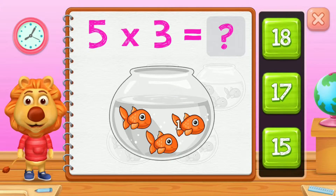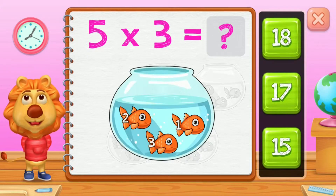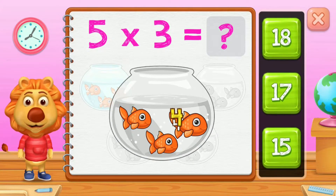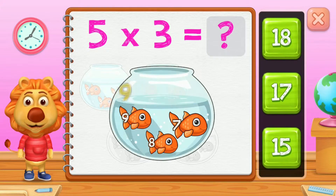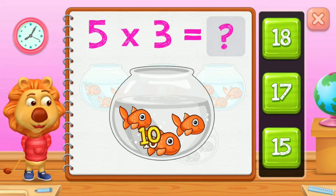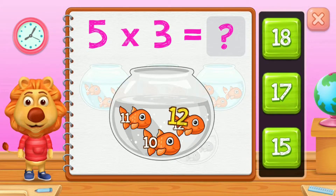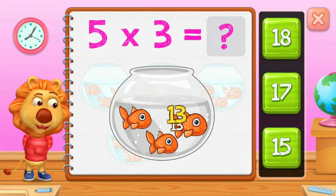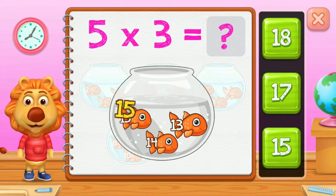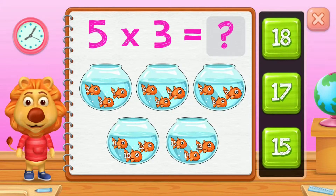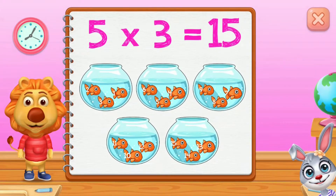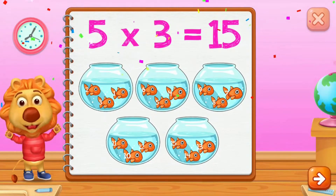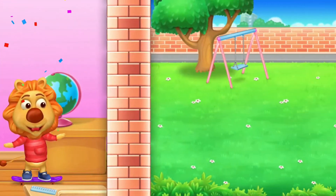One, two, three, four, five, six, seven, eight, nine, ten, eleven, twelve, thirteen, fourteen, fifteen. Five groups of three equals fifteen.